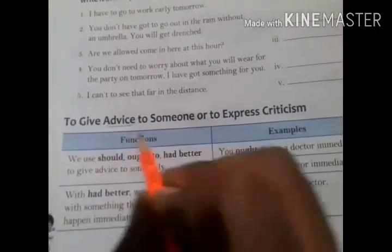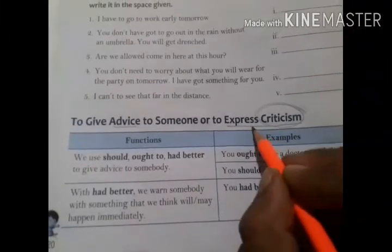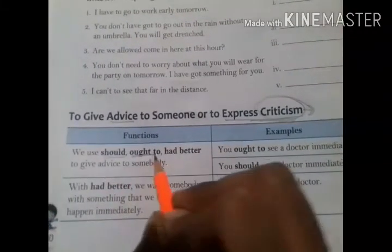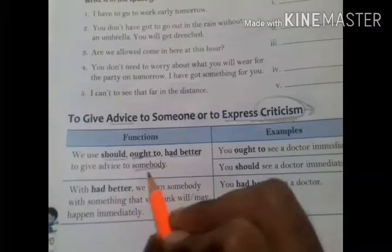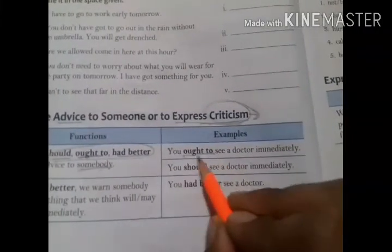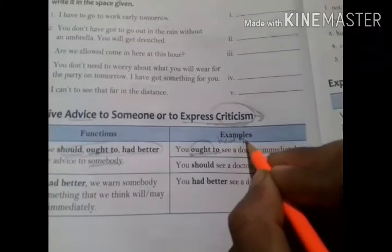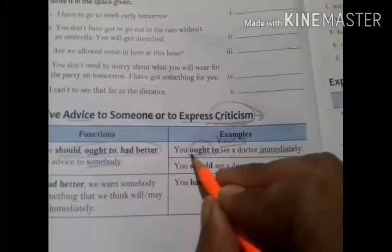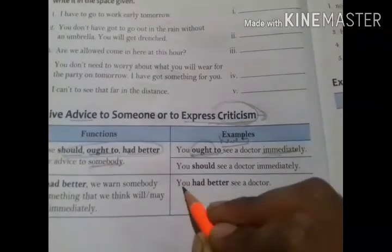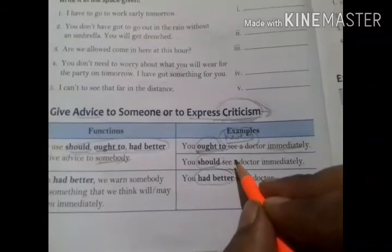For giving advice or expressing criticism — criticism means something you do not like about something or someone — we use should, ought to, or had better to give advice to somebody. For example: 'You ought to see your doctor immediately.' Ought to can also be written as have to. So: 'You have to see your doctor immediately,' 'You should see your doctor immediately,' 'You had better see your doctor.' These auxiliary verbs can all be used to express criticism or advice.